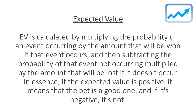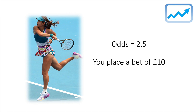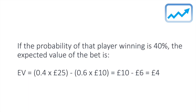Let's look at an example. Say the odds of a particular player winning a tennis match are 2.50 and you decide to place a simple bet of £10 on them to win. The potential return on investment is £25, calculated by multiplying the stake by the odds. If the probability of that player winning is 40%, the expected value of the bet is: 0.4 × £25 minus 0.6 × £10, which equals £10 minus £6.